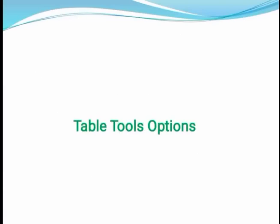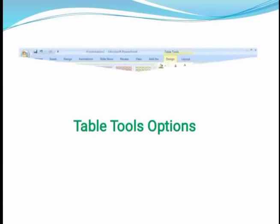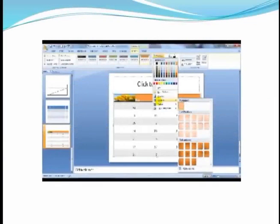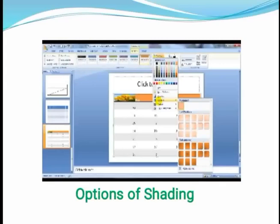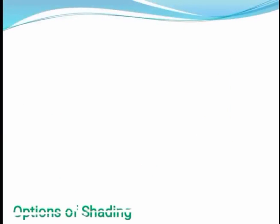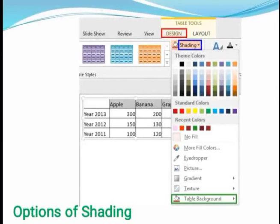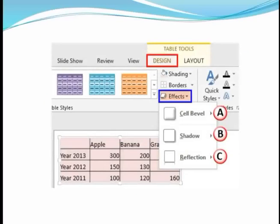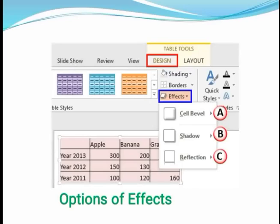Now let's see the Table Tools options. Here you can select the design for the table. The next option is Shading — here you can select which type of shading you require. You can go to the Design menu and select the type of border. For the Effects option, you can go to the Design menu, then go to Effect and select the effect option.